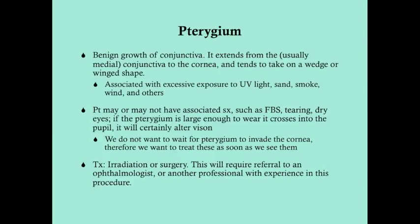Pterygium is a benign growth of conjunctiva that typically extends from the conjunctiva — usually the medial part — to the cornea, and it tends to take on a wedged or winged shape. If you think of the dinosaur pterodactyl, where it gets its name from is 'wing,' and pterygium comes from the same base Greek word — 'ptery' means wing — referring to its winged or wedged shape.